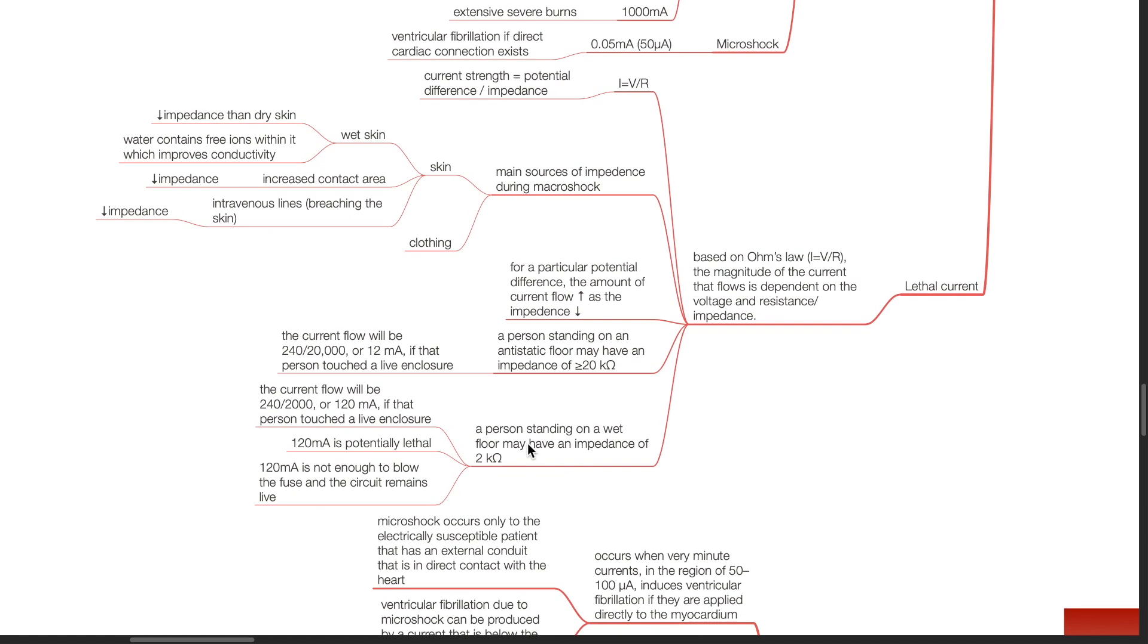However, a person standing on a wet floor may have an impedance of 2000 Ohms. The current flow will be 240 divided by 2000 or 120 mA if that person touched a live enclosure. 120 mA is potentially lethal. However, it is not enough to blow the fuse and the circuit remains live.